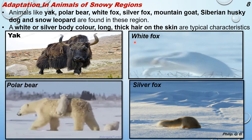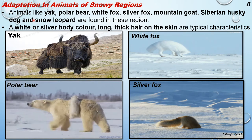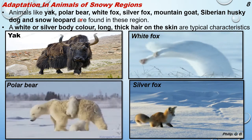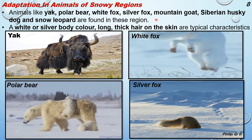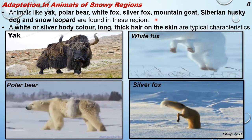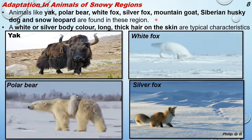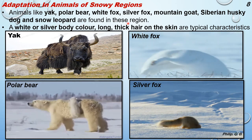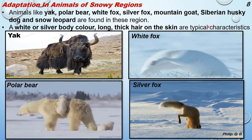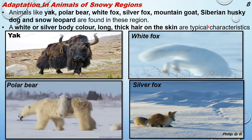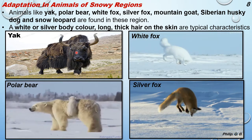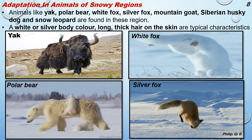Coming to the next adaptation - adaptation in animals of snowy regions. Animals like yak, polar bear, white fox, silver fox, mountain goat, Siberian husky dog, and snow leopard are found in this region. There are many more species than just the polar bear. A white or silvery body color and long, thick hair on the skin are typical characteristics of these animals, protecting them from the cold climate. The yak's body is entirely covered with thick, long hair.